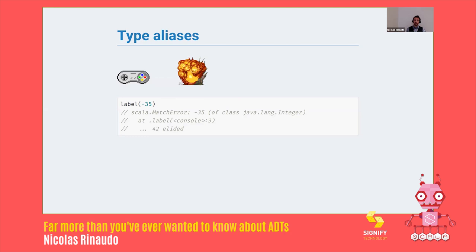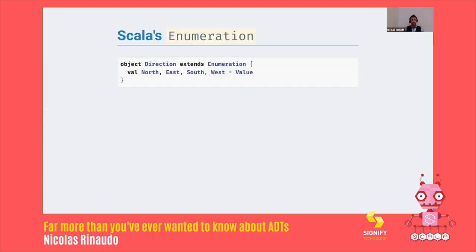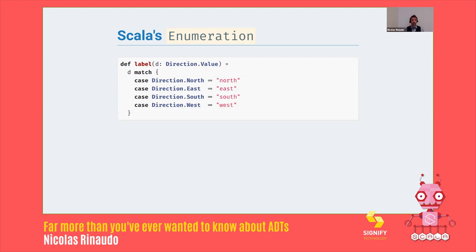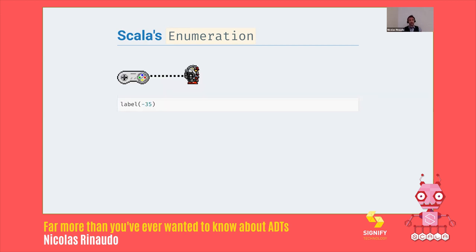Another tool we have in Scala is enumerations. Scala has a standard enumeration type which works like that — you create four values: north, east, south, and west, which are values in the direction namespace which extends Enumeration. Then you have to take a direction.Value, which is a weird type to have. I'd prefer direction, but if that's what it takes to save Gundam kind, let's allow it. And now this will not compile anymore because minus 35 is not a valid direction.Value.